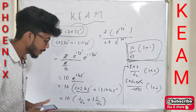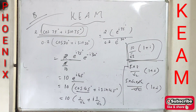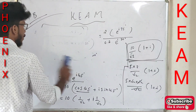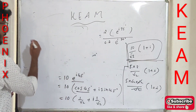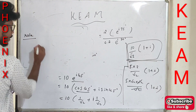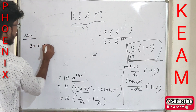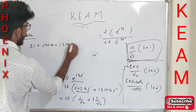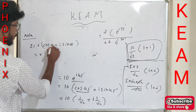This is the first method. Now let me write a note: Z = r(cos θ + i·sin θ) = r·e^(iθ). That is the key formula.